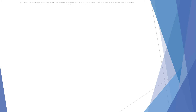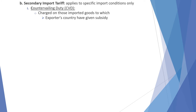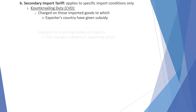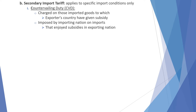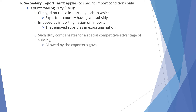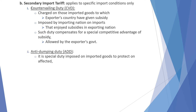Next is secondary import tariff, which applies to specific import conditions only. For example, countervailing duty is charged on imported goods to which the exporter's country has given a subsidy. It is imposed by the importing nation on imports that enjoy a subsidy in the exporting country. Such duty compensates for the special competitive advantage of the subsidy.